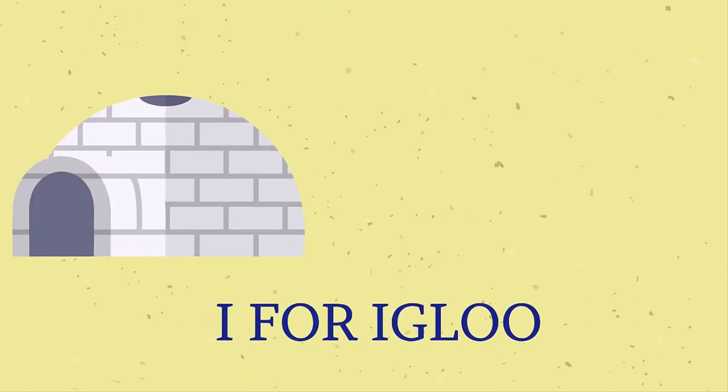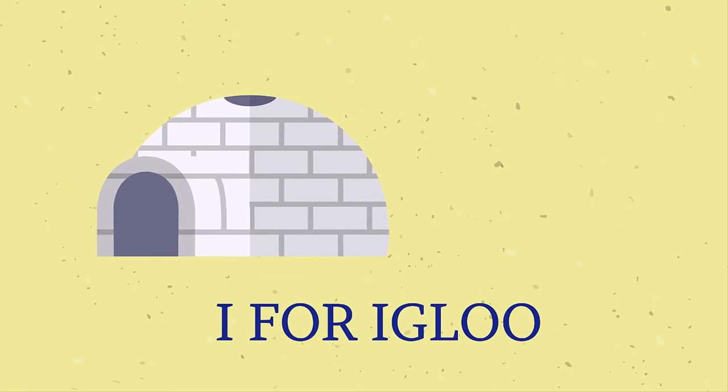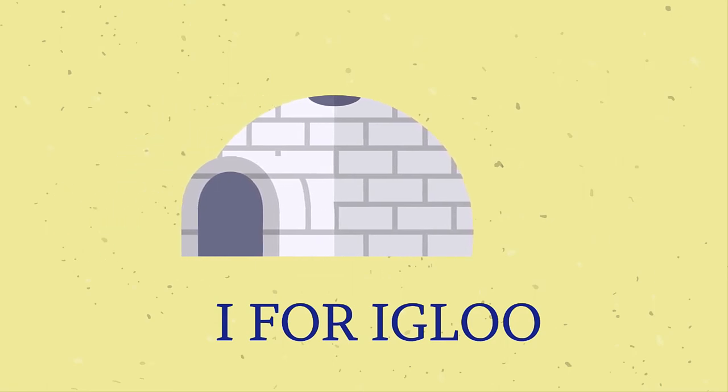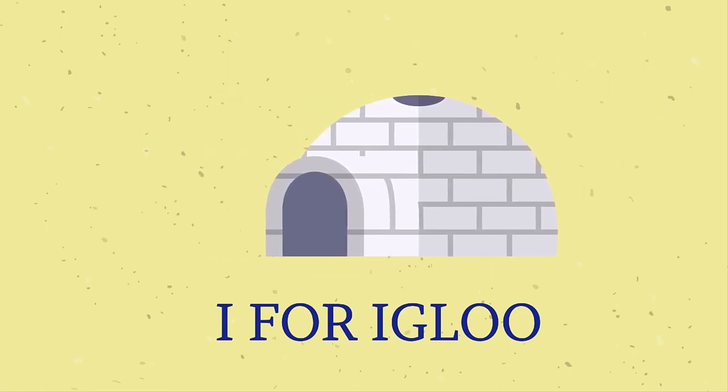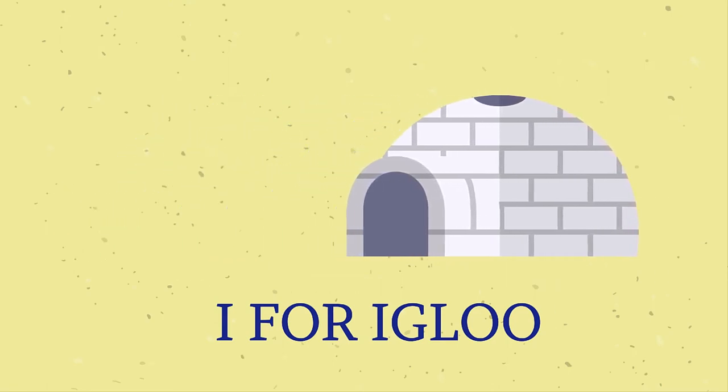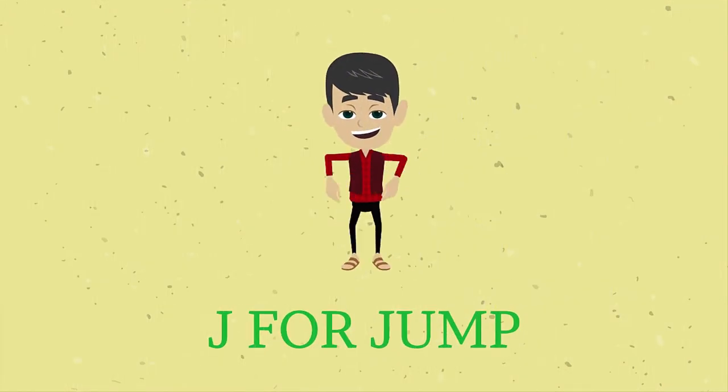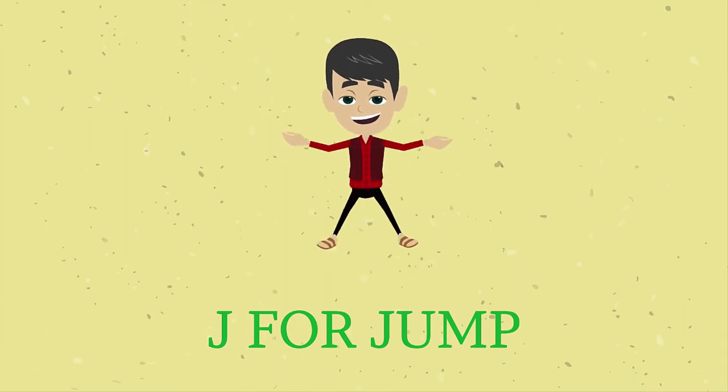I is for igloo, i-i-igloo. J is for jump, j-j-jump.